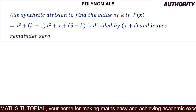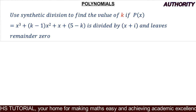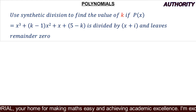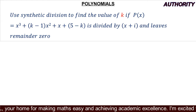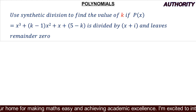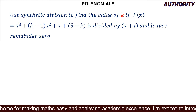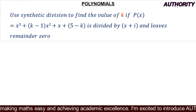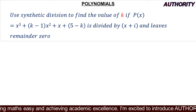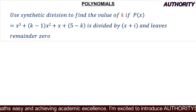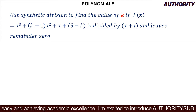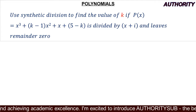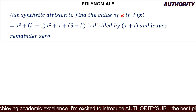We are given p(x) = x³ + (k−1)x² + x + (5−k). When it is divided by x + i, it leaves remainder 0, meaning that x + i is a factor of this polynomial p(x). We are asked to use synthetic division to find the value of k.